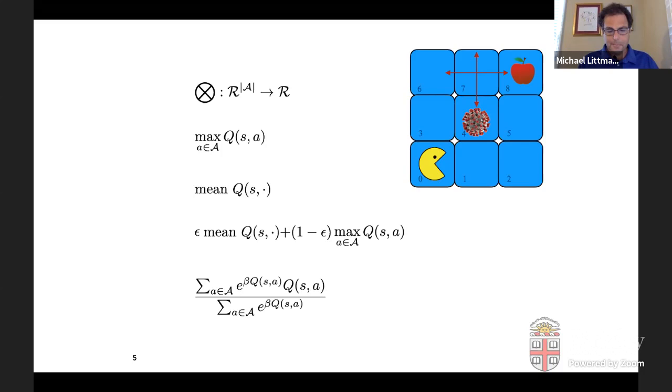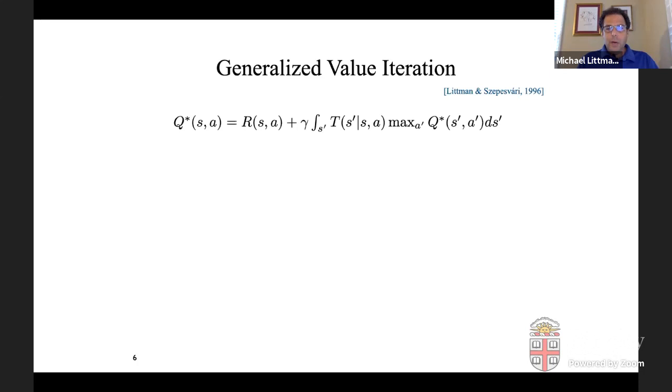And this parameter beta kind of lets us control how much we're going to be acting randomly and just exploring and how much we're going to be maximizing. How much we're going to amplify the probability that we put on the highest value Q value. So these are all things that people do. I guess mean is not really something that people do when they build like Q learning algorithms. But the other ones, you know, epsilon greedy is very popular. You see it in current papers. Boltzmann exploration is very popular as well.